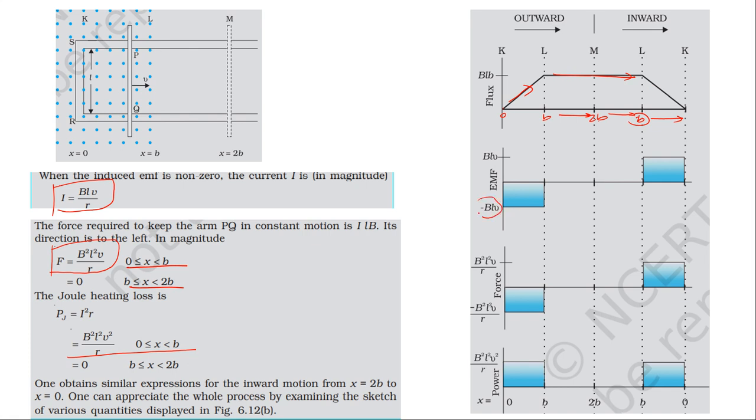The EMF equals minus BLv, which is minus the slope of the flux-time graph. From zero to b, the flux increases (positive slope), so EMF is negative (minus the slope).